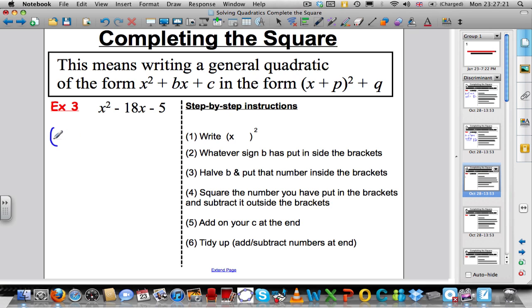Let's do another one. Again, put your x in brackets and square. Whatever the sign of the b is, put that in your brackets. Whatever the b number is, half it, put it inside the brackets. Square that halved b, that 9 in your head, you get 81. Subtract the 81 and then whatever your number term here, here it was negative 5, tag that on the end. So you tidy it up, you have (x - 9)² - 81 - 5 is -86. That is your completed square form.